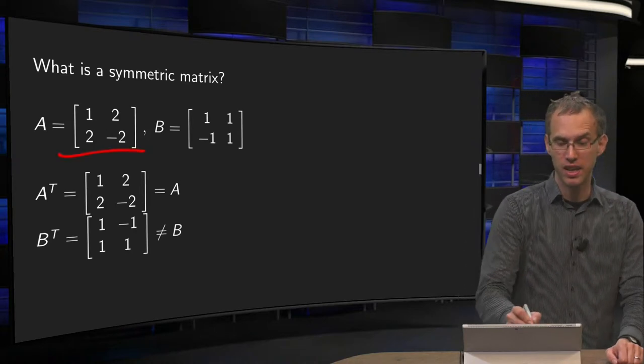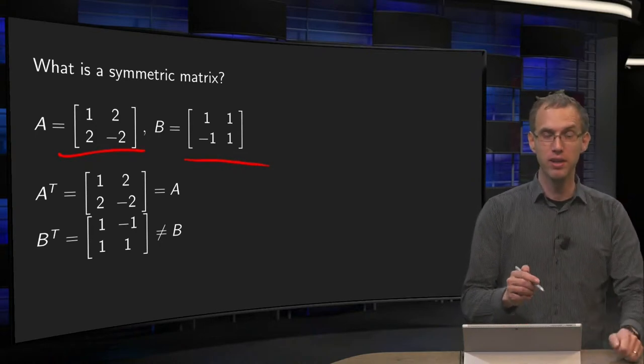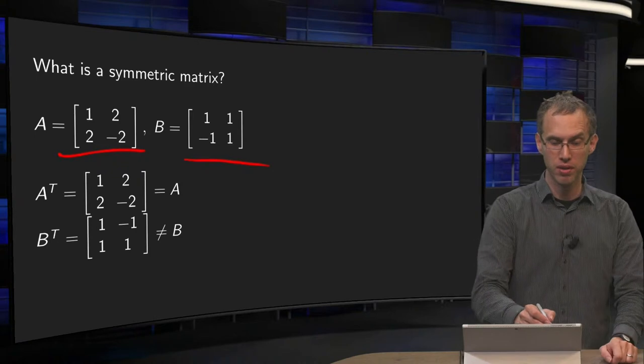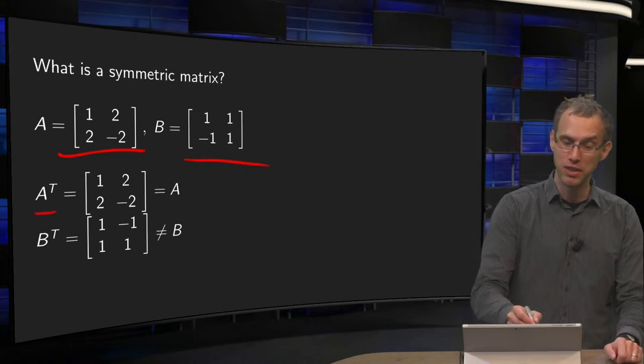We have here a matrix A and a matrix B, and now we are going to compute the transpose of A, so interchange rows and columns, then we get A transpose, and we observe we get exactly the same matrix back,